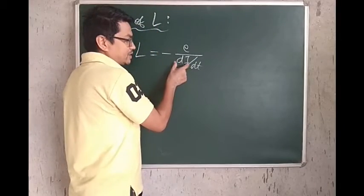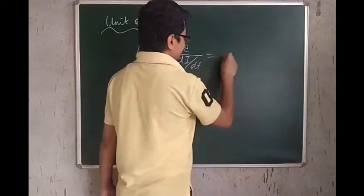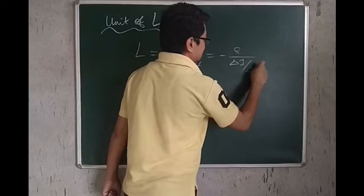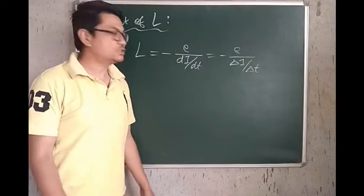The rate of change of current is in the denominator. This can also be written as minus E divided by delta i upon delta t, if the change in time is a long change in time.